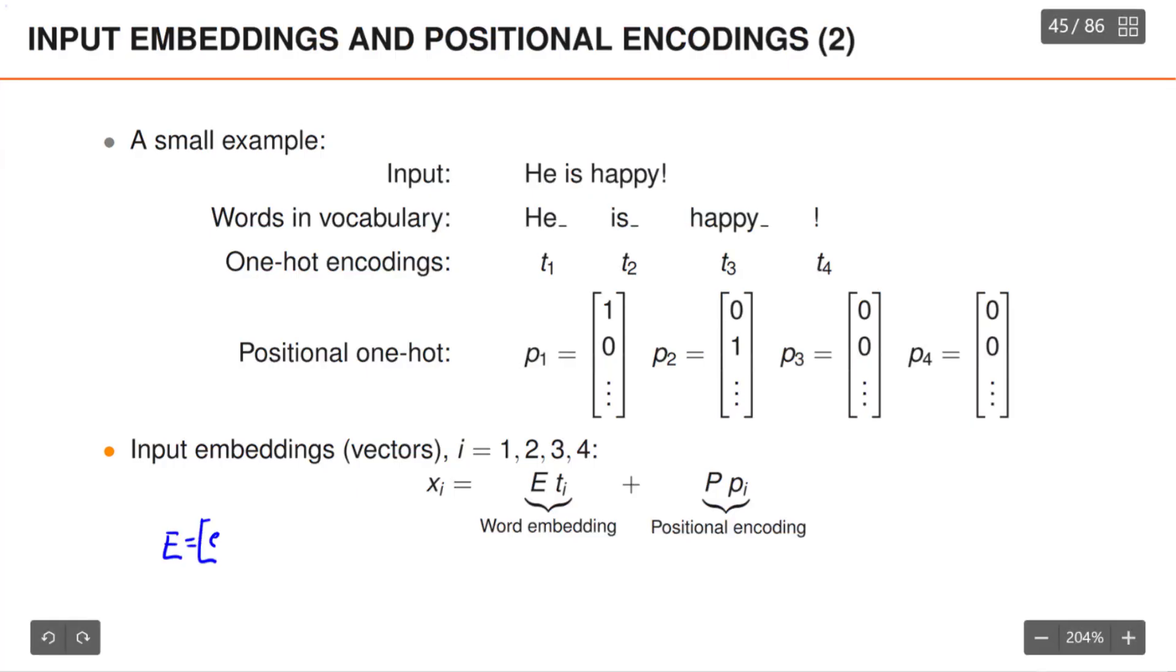We also note that capital E and capital P are both wide matrices, and since both TI and PI are one-hot encodings, this will simply extract one column vector from capital E and one column vector from capital P, and then sum them up. Specifically, if the first word, he followed by space, was actually the 123rd word in our dictionary, capital E times T1 would extract the 123rd column vector from E. Similarly, capital P times P1 would simply extract the first column vector from the matrix capital P. In our example, we would do this four times to compute four input vectors x1 to x4.